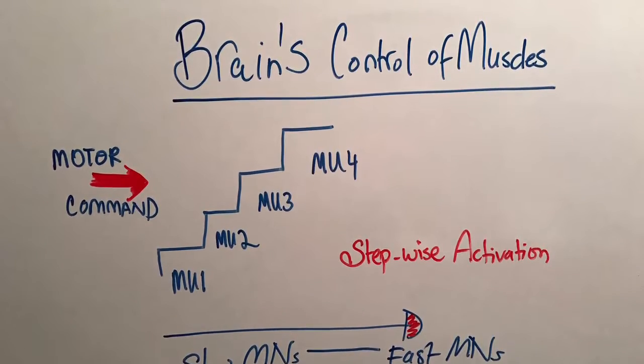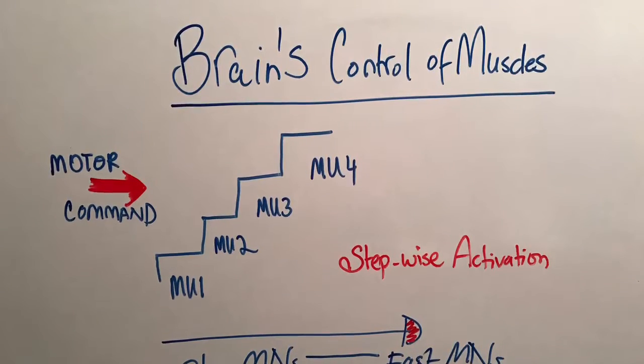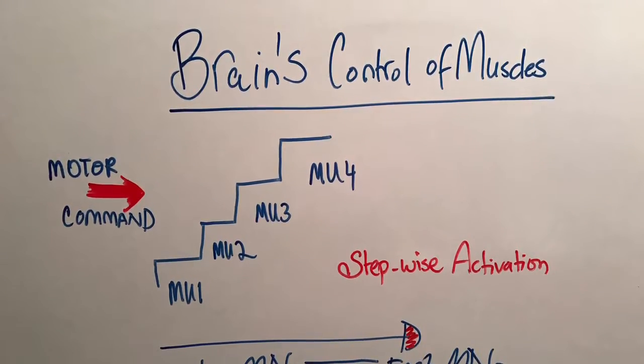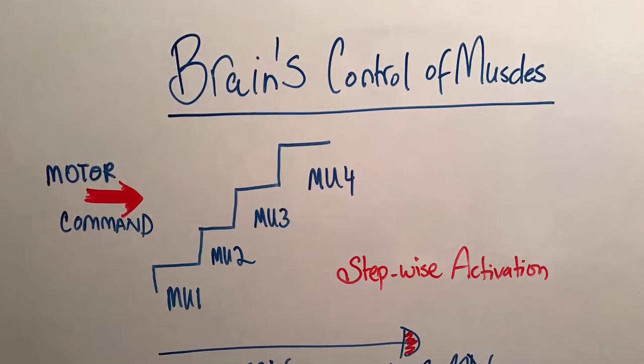This matching of the properties of the motor neuron to its innervated fibers will simplify the brain's control of the muscles.